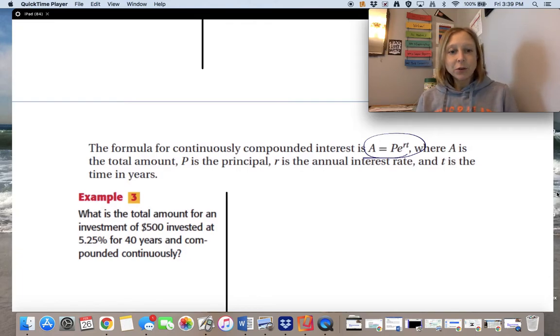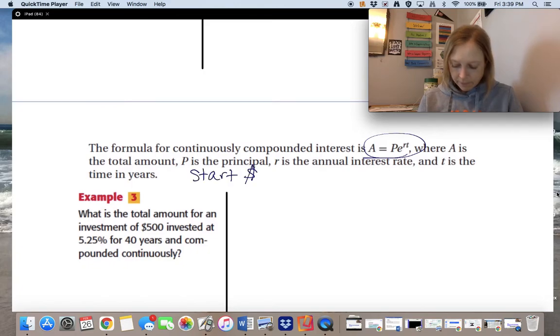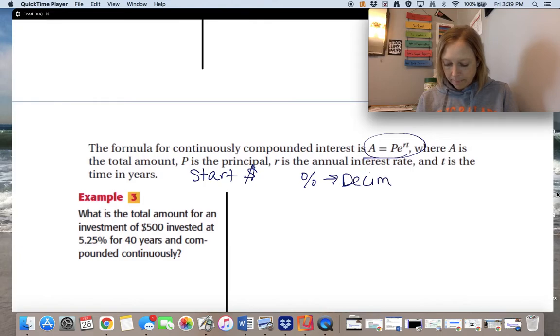A is the total amount. P is the principal. Remember principal is the original amount, the starting amount. So we'll write that there. P is principal. That means start. R is the annual interest rate. Remember we need to change interest rates from percents to decimals. And T is the time in years.